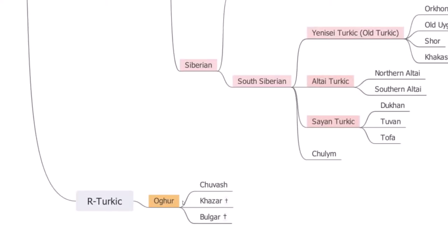In the Oghur branch there are three languages — the others are disputed. We have the Chuvash language, which is still spoken today and is the only survivor of Oghur languages. It's a very distinct language but it's Turkic. We have the Khazar language, spoken between the 7th and 11th centuries, though its classification as Oghur is also disputed. And we have the Bulgar language — the Bulgars were a nomadic Turkic tribe who lived in the Pontic steppes from the 5th to the 10th–11th century.